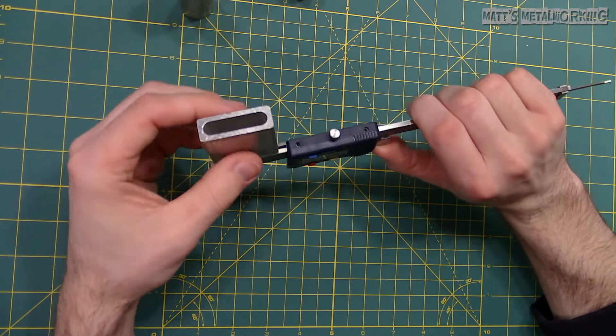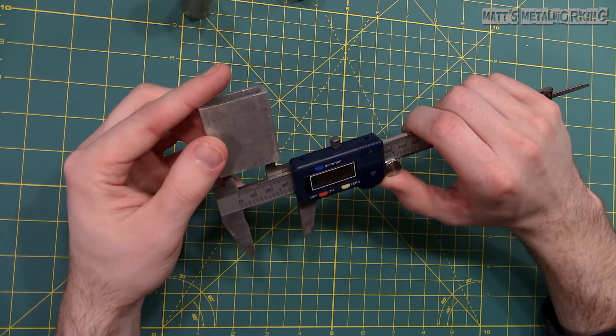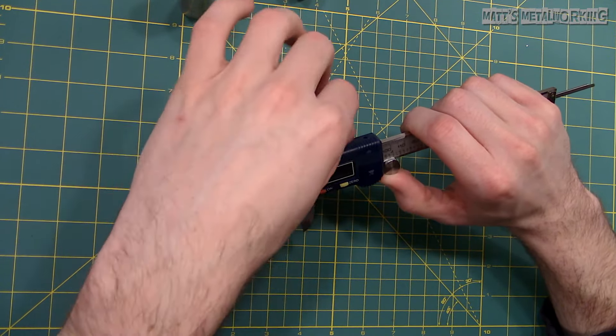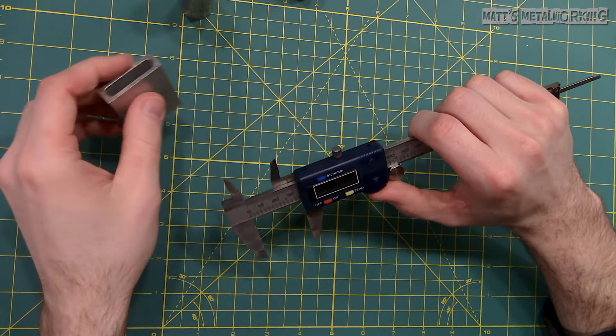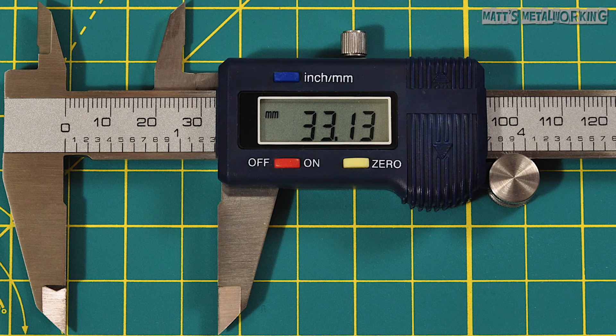Ensure the measuring surfaces are clean on both the part and the caliper. Insert the jaws. This time around I am using the slot. There should be mild drag on the object. This does take some practice to get used to the feel. Then take the final reading.